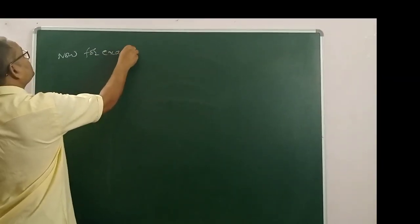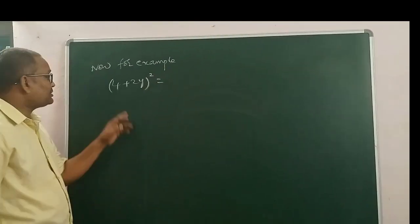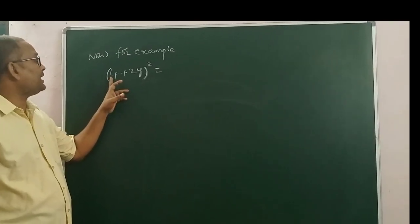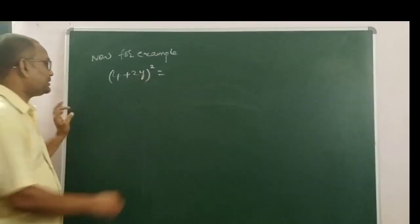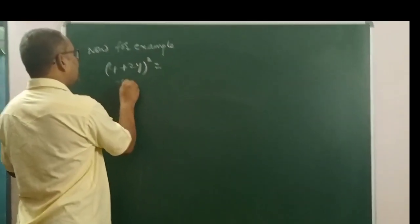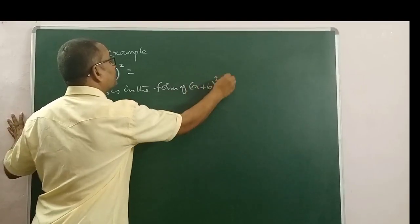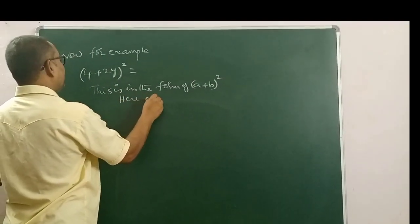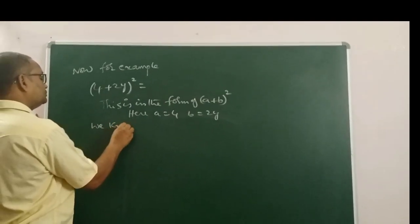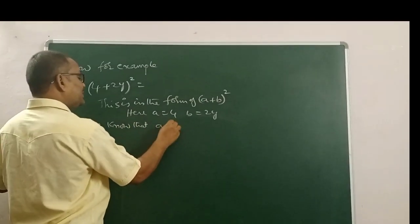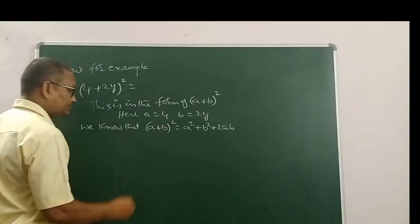For example, 4 plus 2Y whole square. First of all, you have to observe that this is in the form of A plus B whole square. Here, A is equal to 4 and B is equal to 2Y. We know that A plus B whole square is equal to A square plus B square plus 2AB.